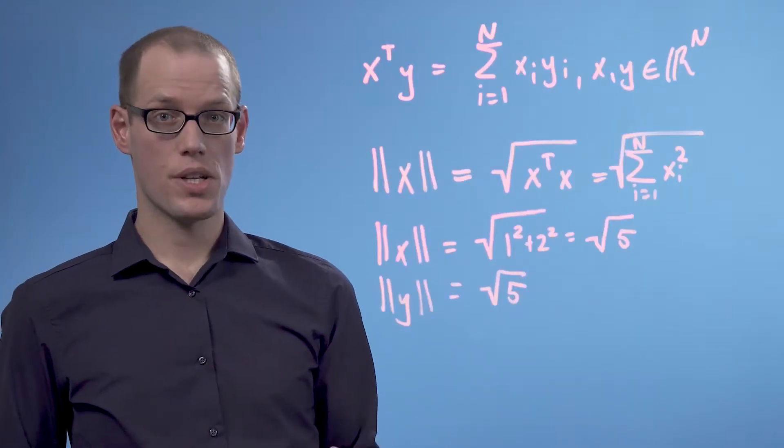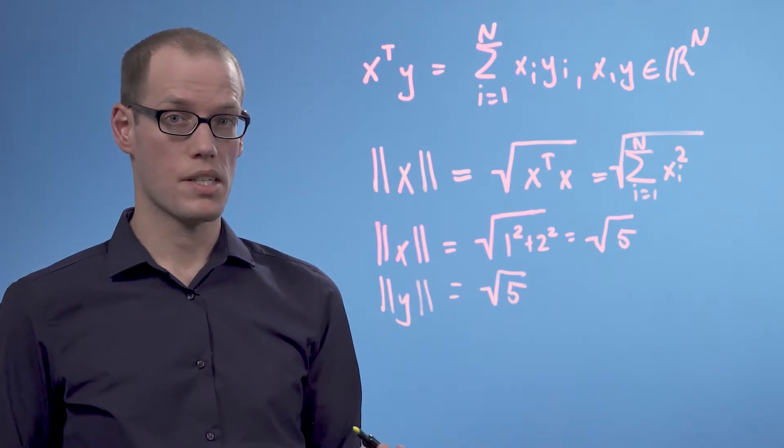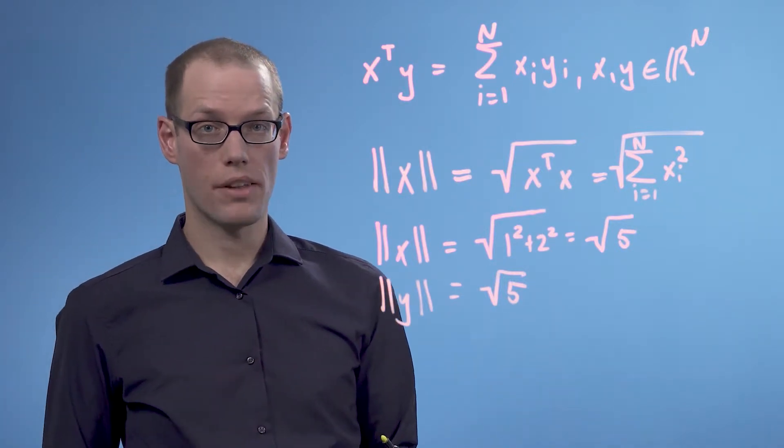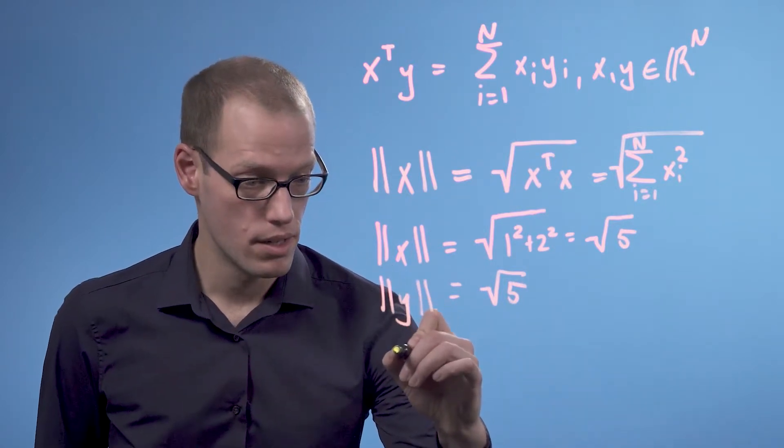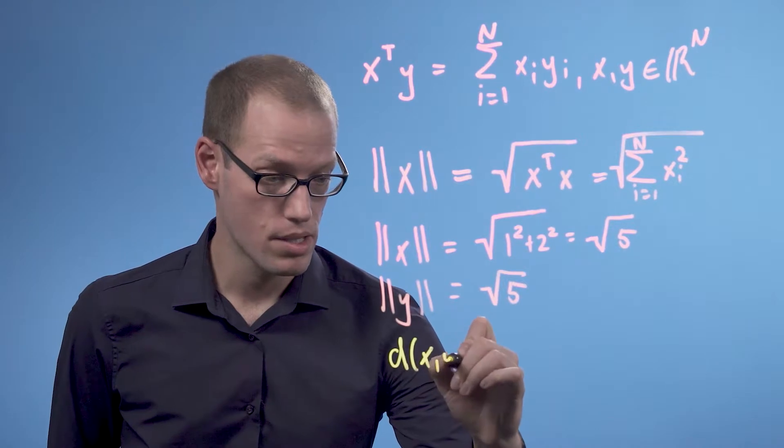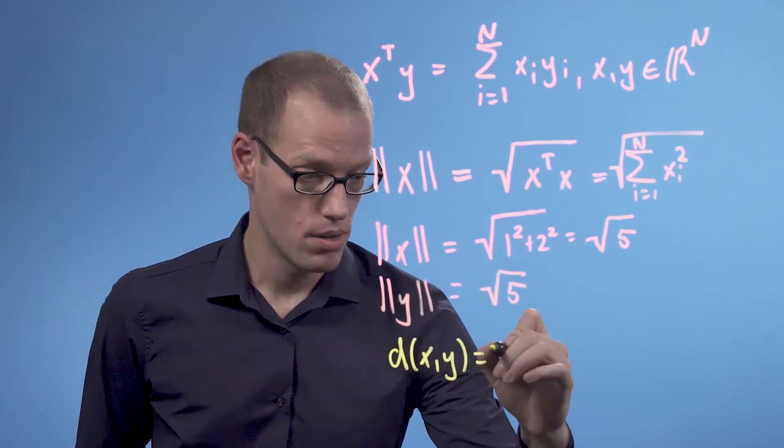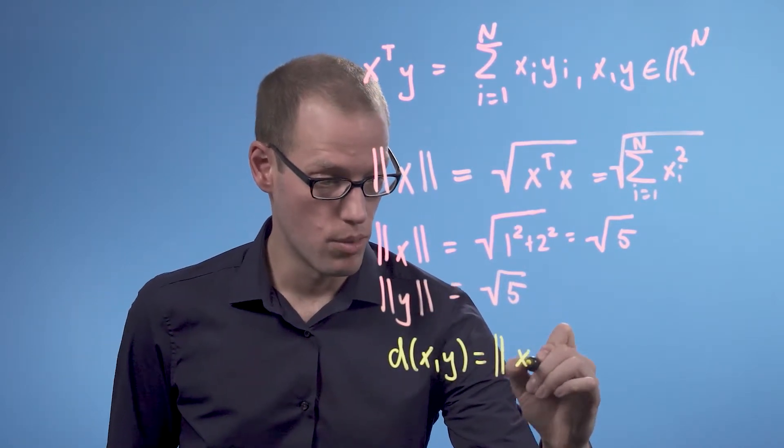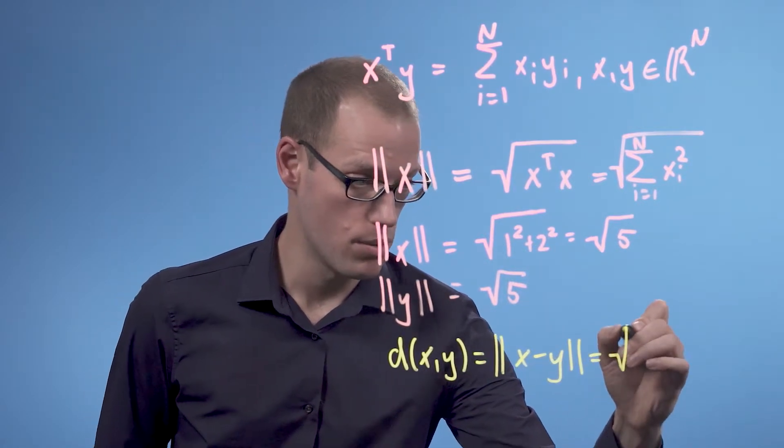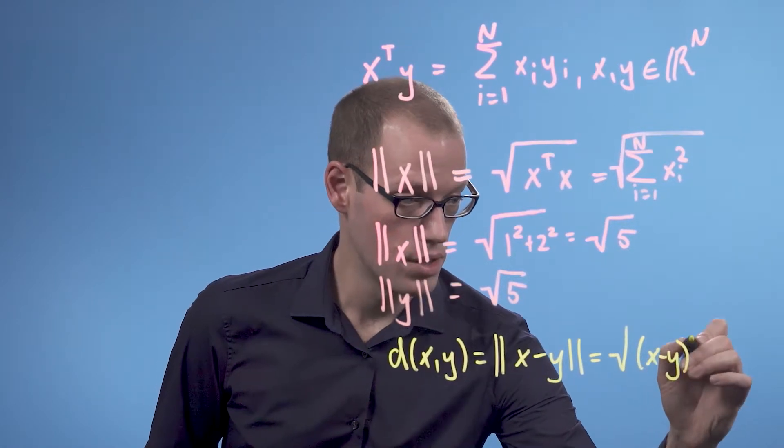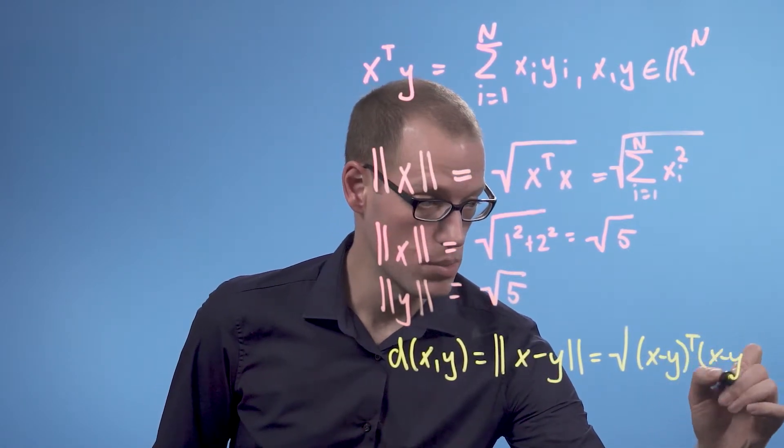If we're interested in the distance between two vectors x and y, we simply compute the length of the difference vector. So we generally define the distance between x and y to be the length or the norm of x minus y, which is the square root of (x minus y) transpose times (x minus y).